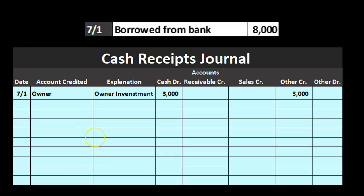Next item on 7-1: borrowed from the bank. The account credited is 'bank' and the explanation is 'bank loan.' We always debit cash because it's the cash receipts journal and we're always increasing cash. The other side goes to 'other' again, because we don't expect to have too many bank loans — hopefully most of the time we're making sales or collecting cash on account for past sales. We break it out into other and record the specific account when we make the journal entry at the end of the month.